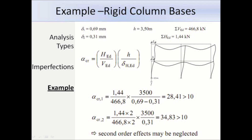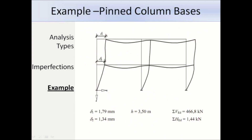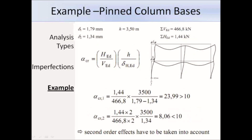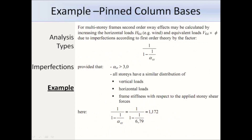Next we work out the value of alpha crit for the case of pinned column bases. The deflected shape is shown with deflections marked using a computer program. The storey height is 3.5 metres, the sum of vertical loads is 466.8 kN, and the sum of the EHFs is 1.44 kN. Alpha crit works out as 23.99 for the first storey and 8.06 for the second storey. Since 8.06 is less than 10, we will have to consider second order effects. For the pinned column base scenario, second order effects may be calculated by increasing the horizontal loads and EHFs using the amplification factor, which works out as 1.172. We would need to apply that factor to all of the lateral loads.